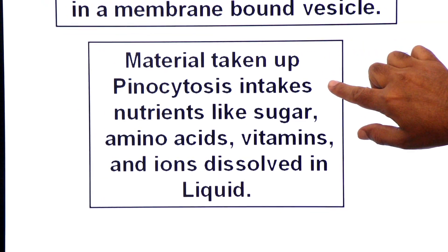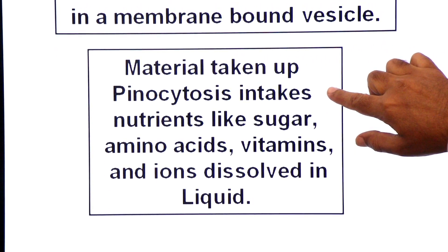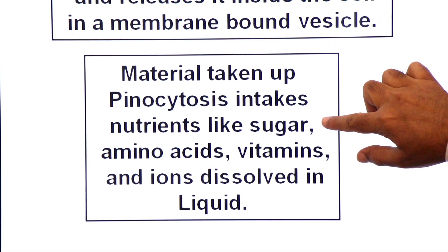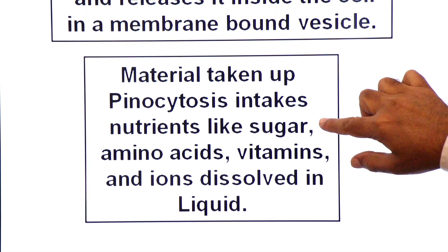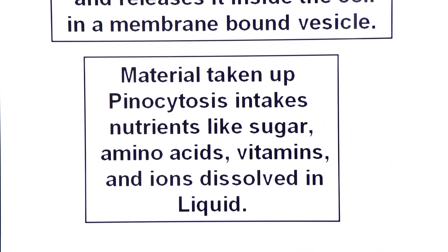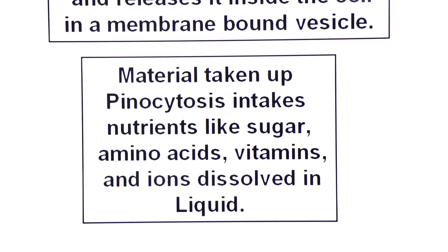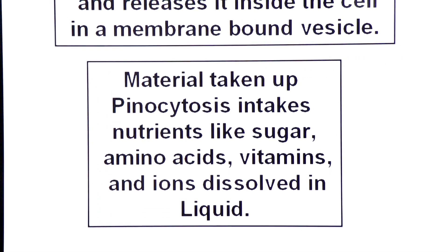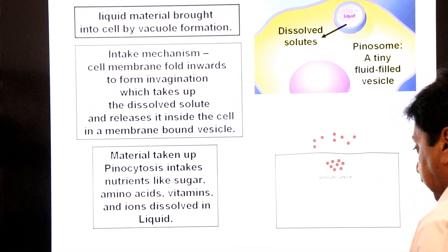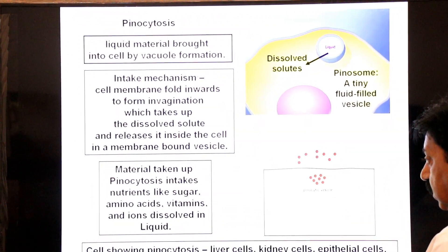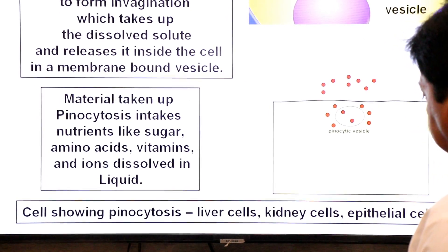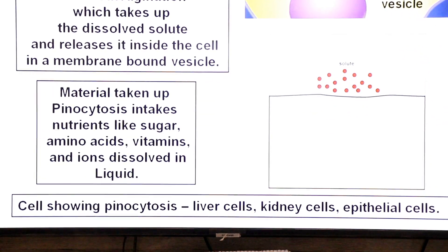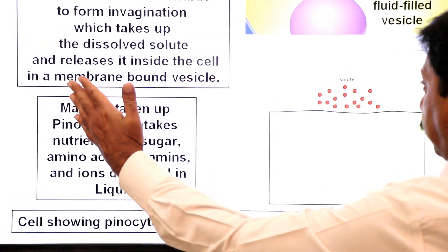The material taken up in pinocytosis is usually nutrients like glucose, amino acids, vitamins, and ions dissolved in liquid. Cells showing pinocytosis include liver cells, kidney cells, and epithelial cells.